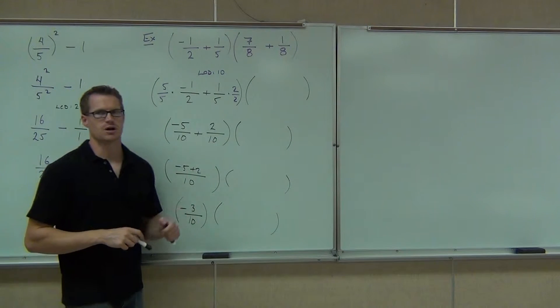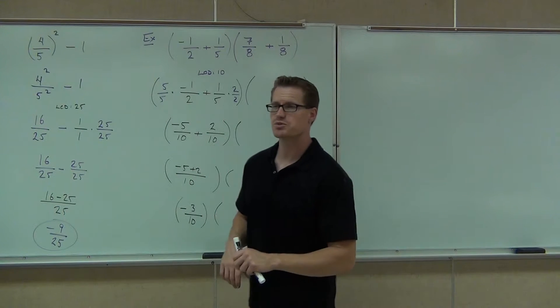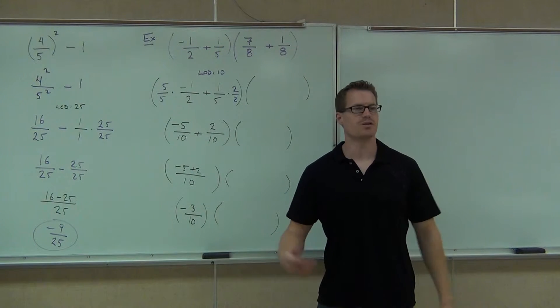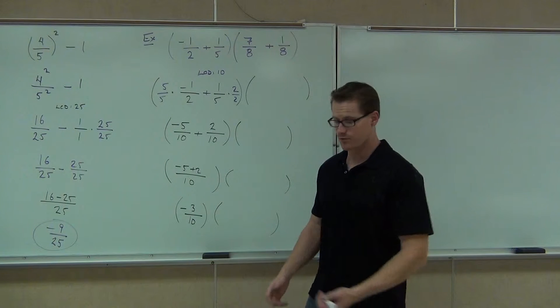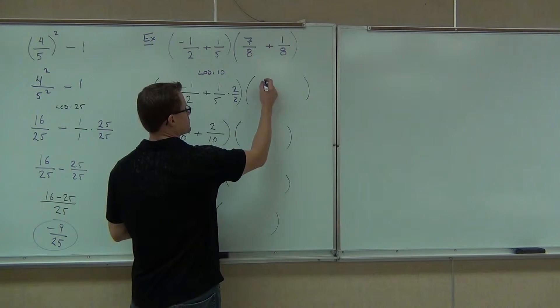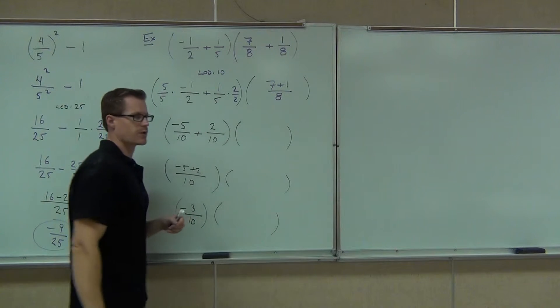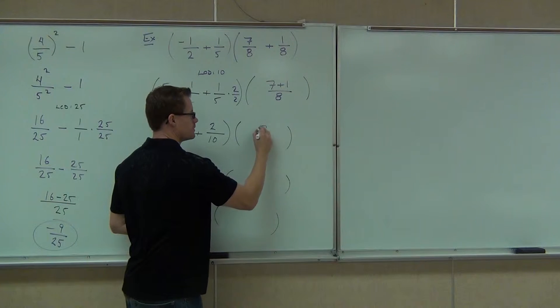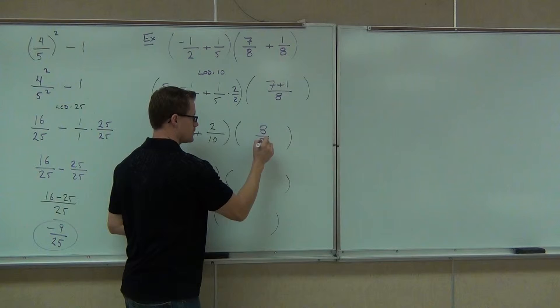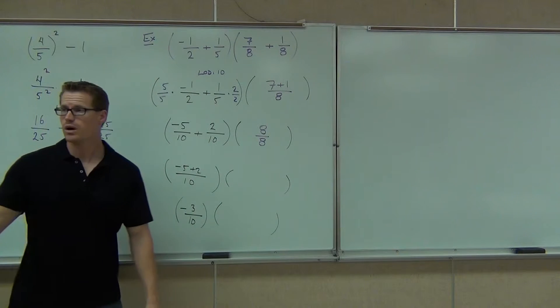Now, we can finish this off. How about the 7/8 plus 1/8? Do we need to do anything there to find a common denominator? That's great. It's already got one for us. So we're just going to write this as 7 plus 1 over 8. That's going to be, yeah, 8 over 8. Yeah, that's 1. Okay.